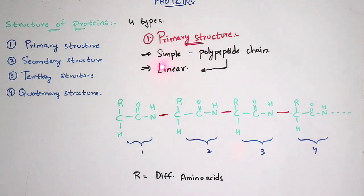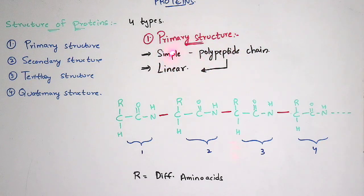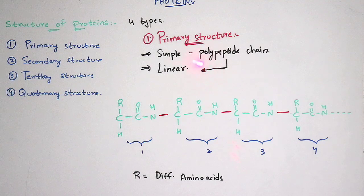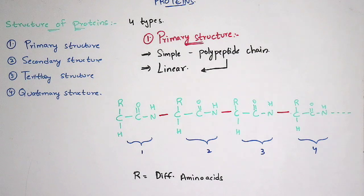The primary structure is a simple structure which consists of a polypeptide chain. The polypeptide chain is linear in shape — remember this point. If asked what is the shape of the primary structure or the polypeptide chain in the primary structure, the answer is linear.